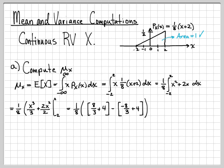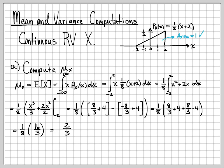Then I subtract the expression evaluated at negative 2. Negative 2 cubed is negative 8, giving negative 8 thirds. And negative 2 squared is 4, so I get 4 again. Simplifying, the 4s cancel, and I end up with 16 thirds. Multiplied by one eighth, that gives one eighth times 16 thirds, which equals 2 thirds. So the mean is 2/3.